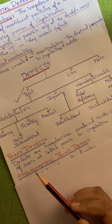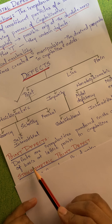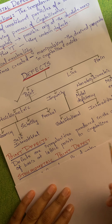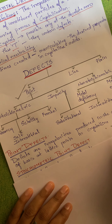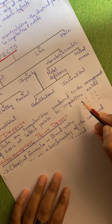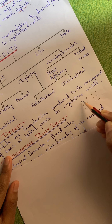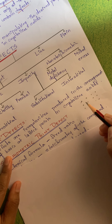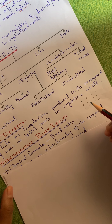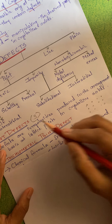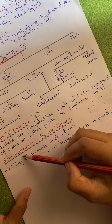In this chapter we will focus on point defects. Point defects are classified into three types: stoichiometric defect, substitutional defect, and interstitial defect. The last one — non-stoichiometric defect — is further classified as metal deficiency defect and metal excess defect.